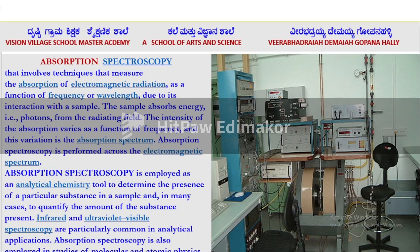Absorption spectroscopy involves techniques that measure the absorption of electromagnetic radiation as a function of frequency or wavelength, due to its interaction with a sample. The sample absorbs energy — photons from the radiating field. The intensity of absorption varies as a function of frequency, and this variation is the absorption spectrum. Absorption spectroscopy is performed across the electromagnetic spectrum.